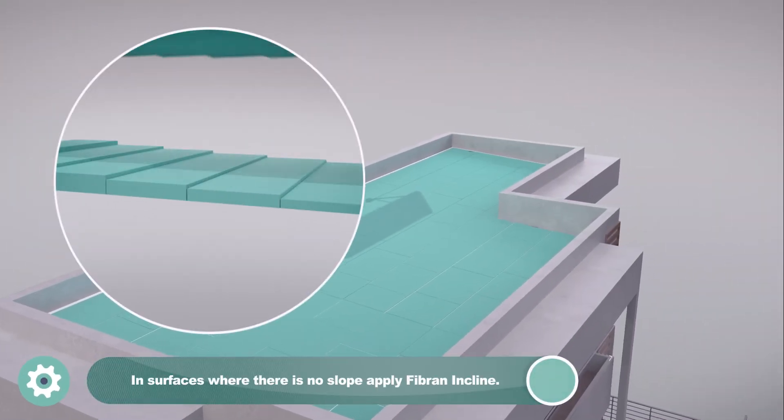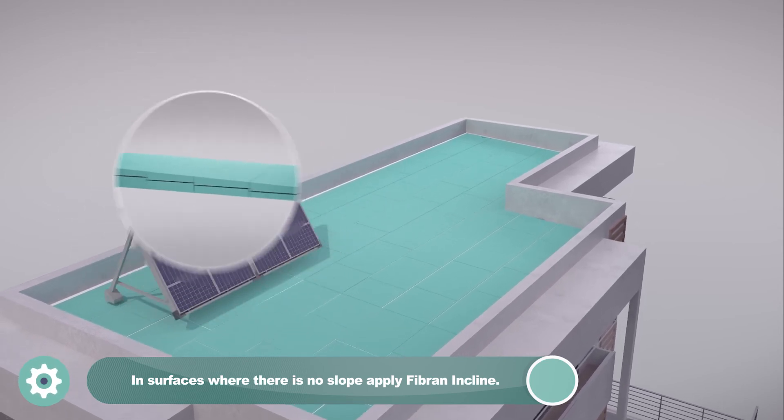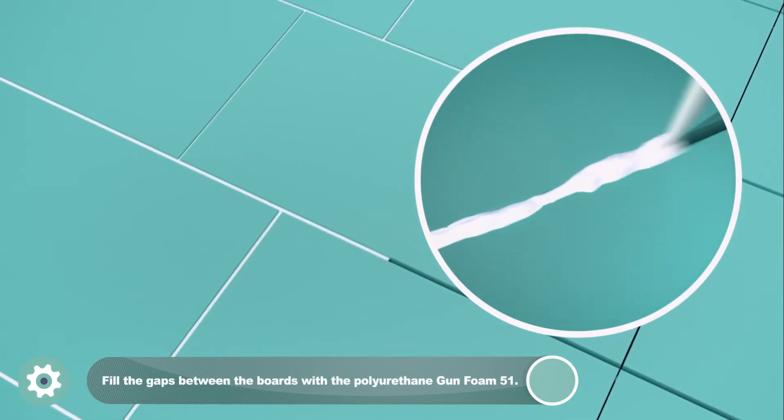In case we want to correct leaks, we install the XPS Fibrin Incline boards which have a 1% slope. The gap between the boards should be filled with polyurethane Gun Foam 51.